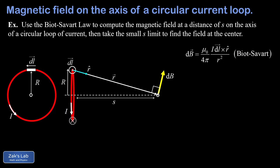This magnetic field contribution dB points off at a weird angle, and we need to add up all contributions from every dl around the ring. Fortunately, there's a symmetry: every single dl giving a dB will be matched with a dl on the opposite side of the ring, producing a contribution with exactly the opposite off-axis component. Those vertical components cancel each other out, and only the horizontal components survive when we add up all contributions around the ring.